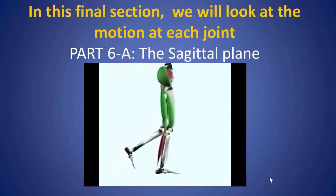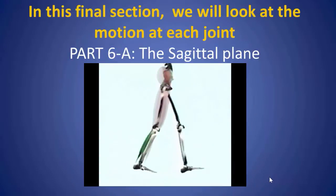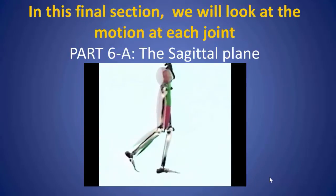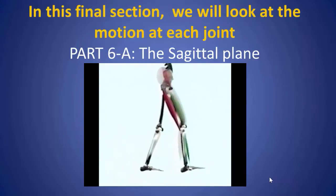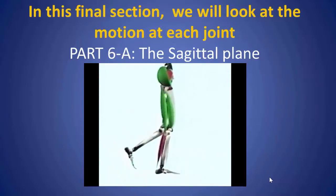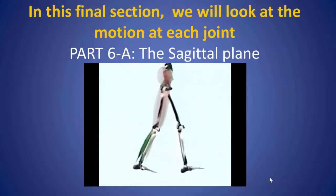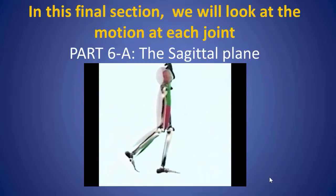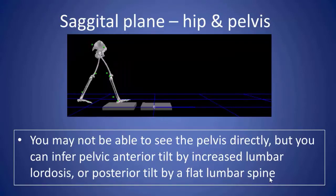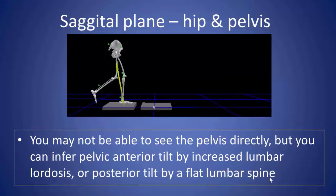In this final section, we're going to look at the motion of each joint from the top down, first in the sagittal plane in section A, and then in the coronal and axial plane in section 6B. First, we'll look at the hip and pelvis.